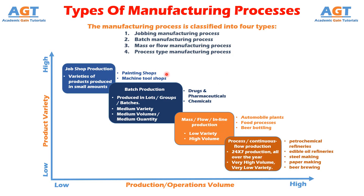Process Type Manufacturing Process is used to produce products which need a particular process and a definite sequence of operations. For example, petroleum. In this, production run is conducted for an indefinite period.